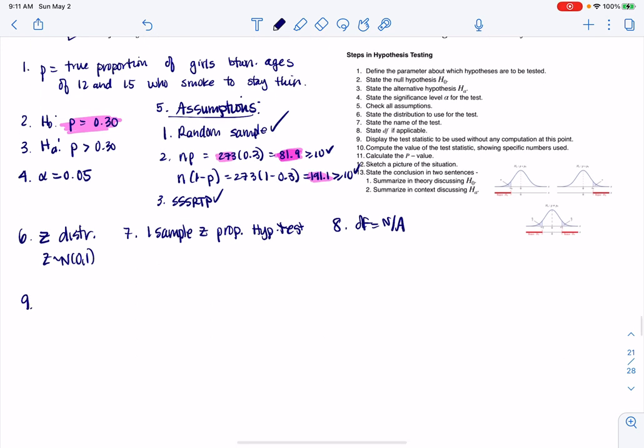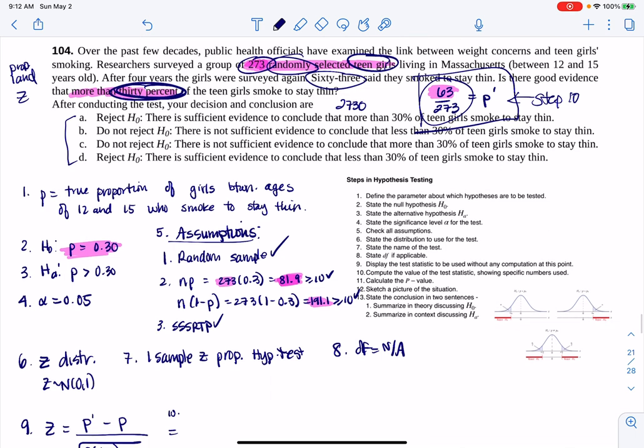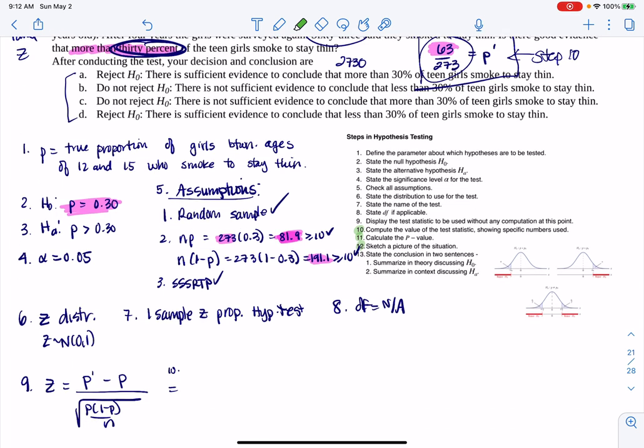For our test statistic, let me write this out. This is going to be P prime minus P over the standard error of our sampling distribution. For step 10, I'm going to go ahead and fill these numbers in. I want to find out the decimal value of 63 out of 273. What I'm going to do right now is I'm going to cut over to my calculator and get all of this stuff at once. I'm about to get steps 10, 11, and 12 right from my calculator.